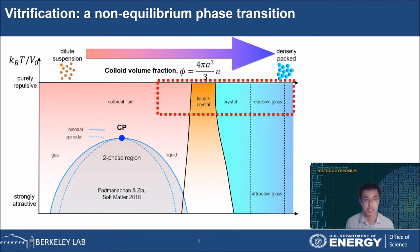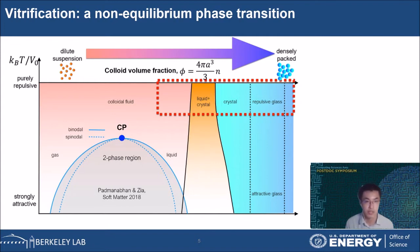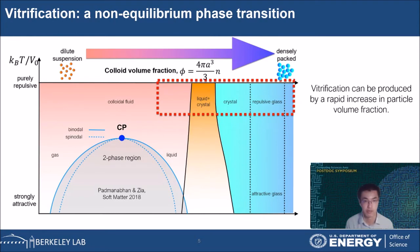Today I will focus on this region: pure repulsive hard spheres undergoing liquid-solid transition as a function of volume fraction. Note that a system can form either crystal or glass as it solidifies. If the rate of change of volume fraction is low, particles have enough time to relax to their lowest free energy state. But if the rate is high, particle relaxation can be hindered and the system gets stuck in an amorphous structure — a glass forms. This is a non-equilibrium phase transition called vitrification, or sometimes called a glass transition.